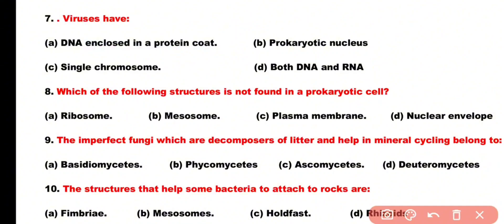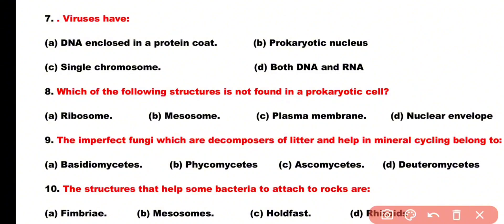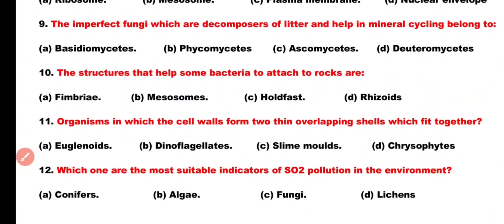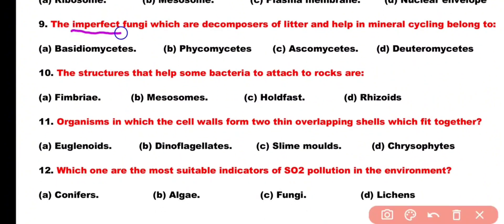Question number 8: Which of the following structures is not found in a prokaryotic cell? Options: ribosome, mesosomes, plasma membrane, nuclear envelope. Correct answer is option D. Nuclear envelope is absent in prokaryotic cells.